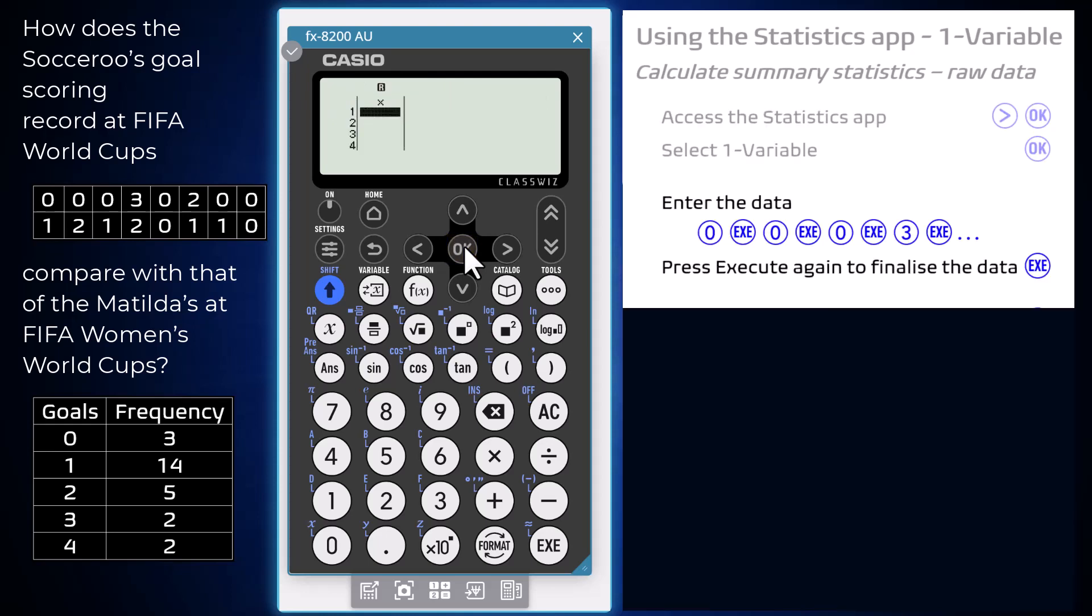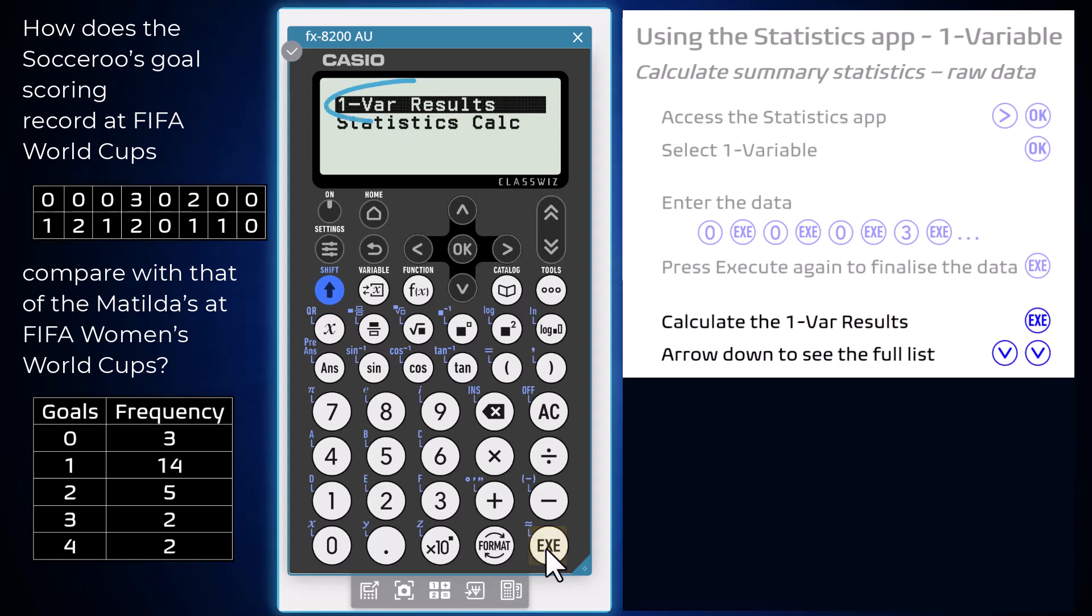Enter the data set, pressing execute after each entry. Once all are entered, press execute once again to finalize the data set. Choose to see the one variable results by pressing execute.